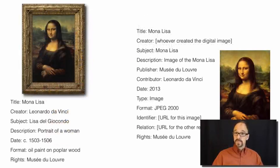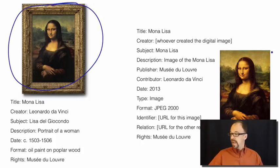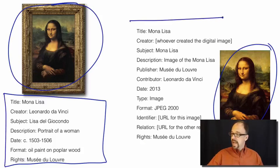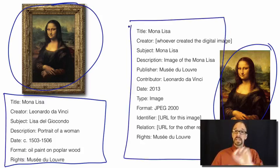Now let's talk about the one-to-one principle. What we have here is the original Mona Lisa — the painting in the Louvre — and a digital representation. Each one of those objects has its own metadata record. That's the one-to-one principle. Each representation is a distinct object, and each object has its own metadata record.